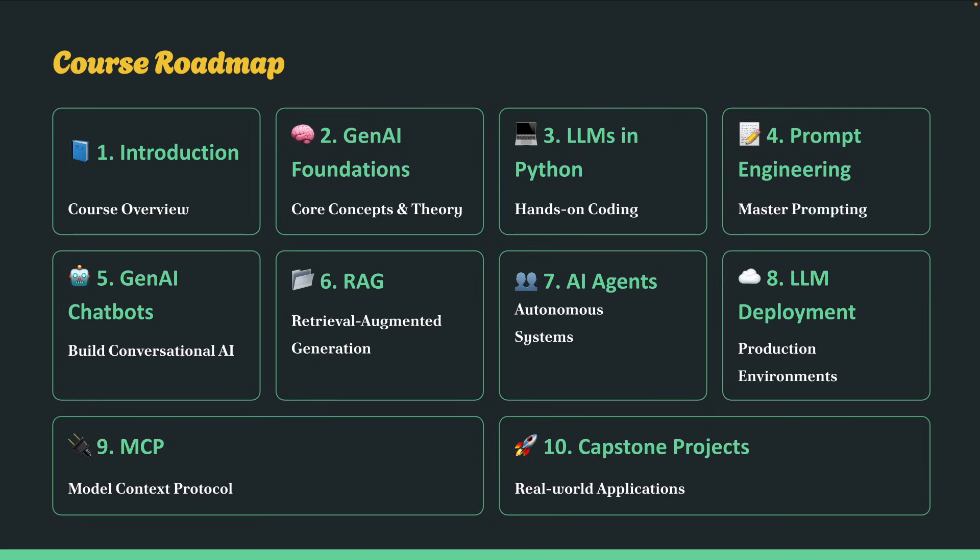The third section is about accessing LLMs in Python. You will connect to models like OpenAI, Gemini, Grok, and Ollama and learn to use them through LangChain and LlamaIndex. The fourth section is about Prompt Engineering, where you will practice prompt templates, zero-shot and few-shot prompts to control outputs effectively.